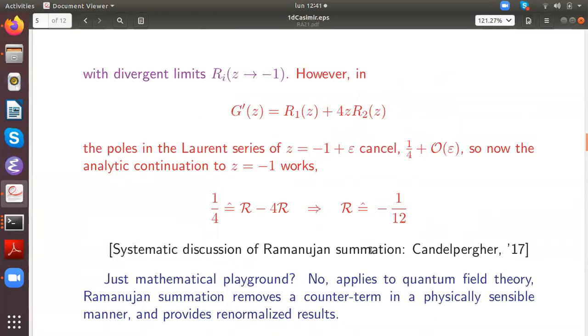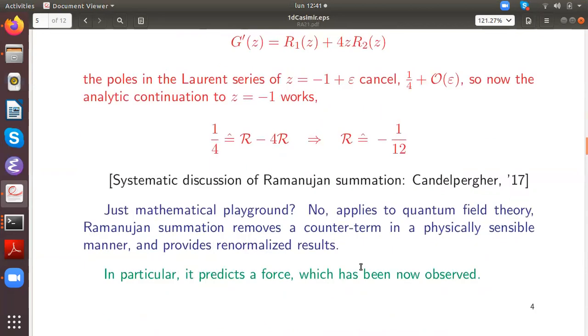A systematic discussion of Ramanujan summations was recently done by a French mathematician. This looks like a mathematical playground, but in fact it has applications to physics, more precisely to quantum field theory, where Ramanujan summation removes a divergent term, which for us is the counter term, in a physically sensible manner and thus provides renormalized results.